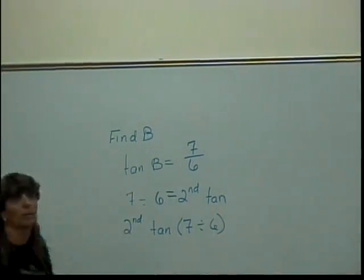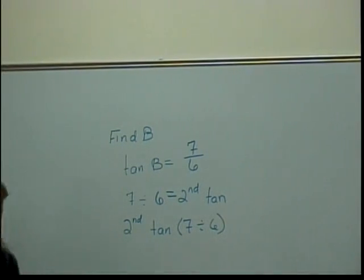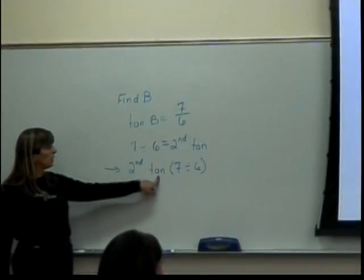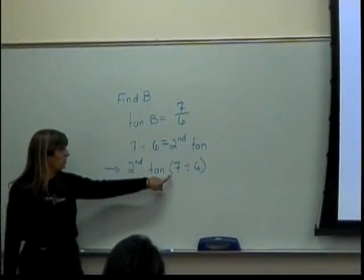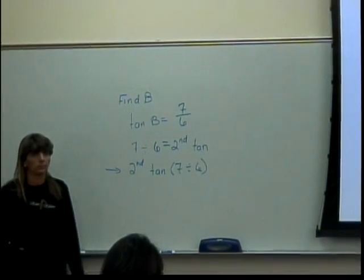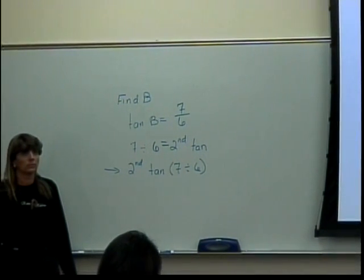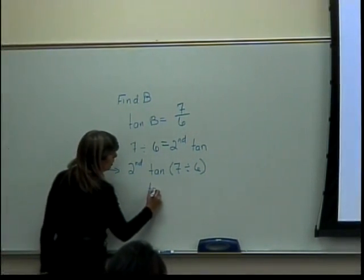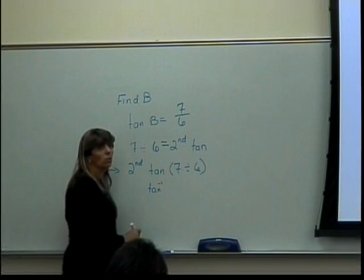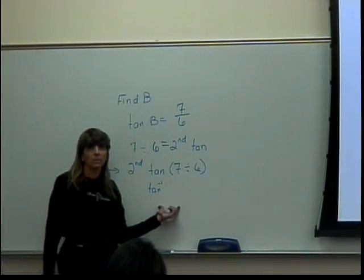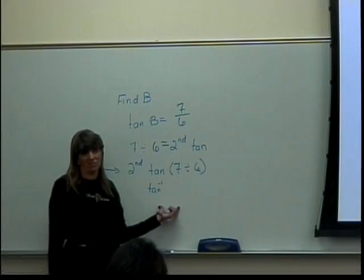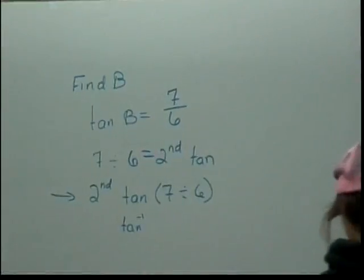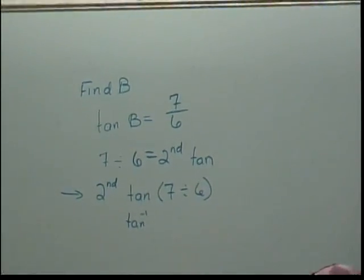It depends on your calculator. What kind of calculator do you have? TI-83. This is the TI-83 version. You hit your second button — it's saying, tell me what angle made the tangent 7 divided by 6. The symbol you see on there is tan negative 1, which is called the inverse tangent, which produces angles. That's the important part — it's the one that produces the angles as opposed to producing answers related to size.